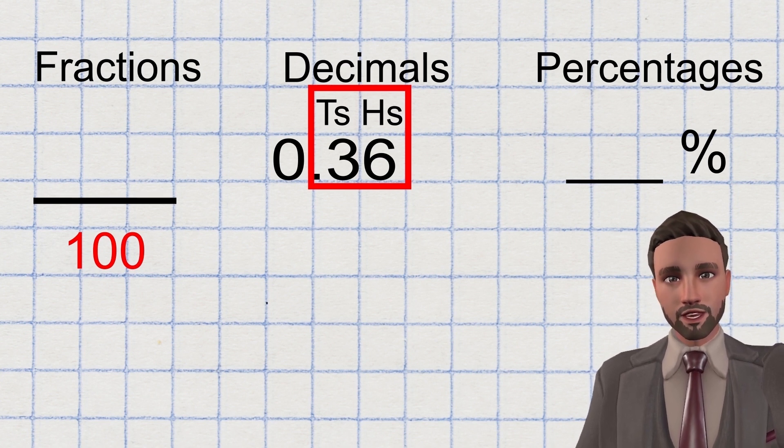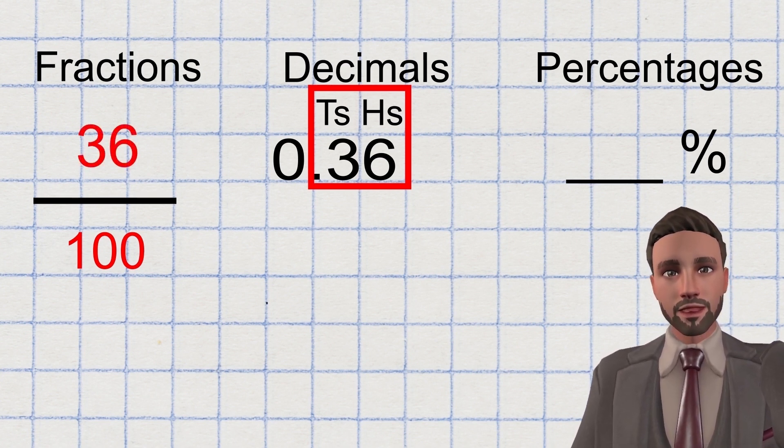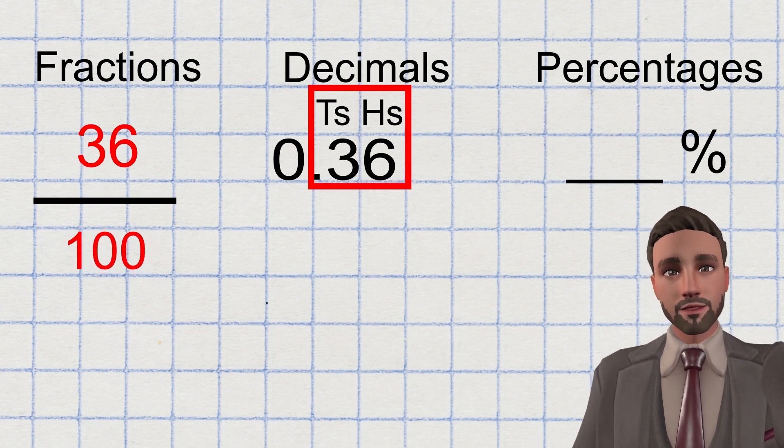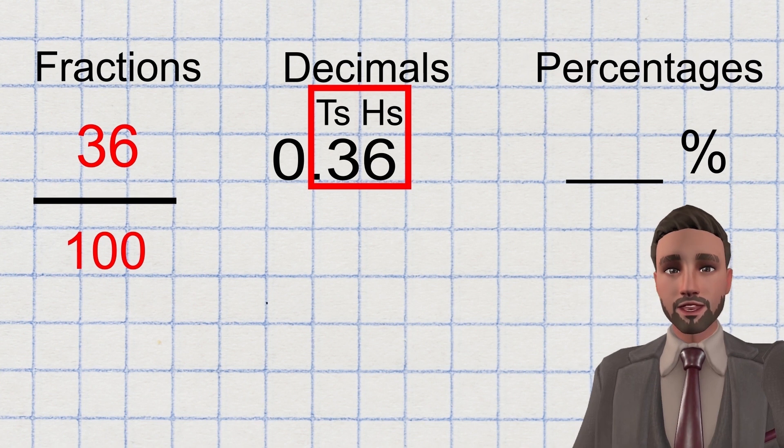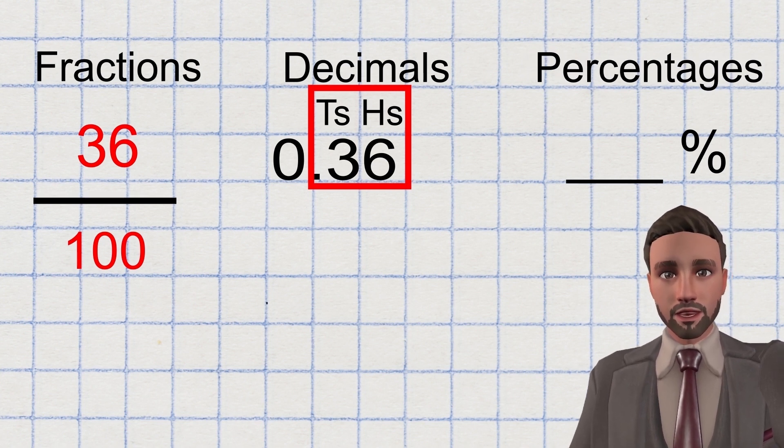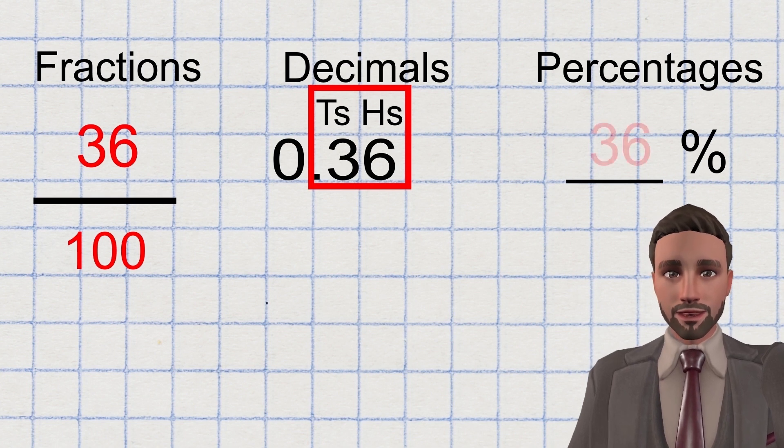As a fraction, 36 at the top, hundredths at the bottom, it is split into 100 parts. As a percentage, it is already split into 100 parts. So 36 over 100 is the same as 36%.